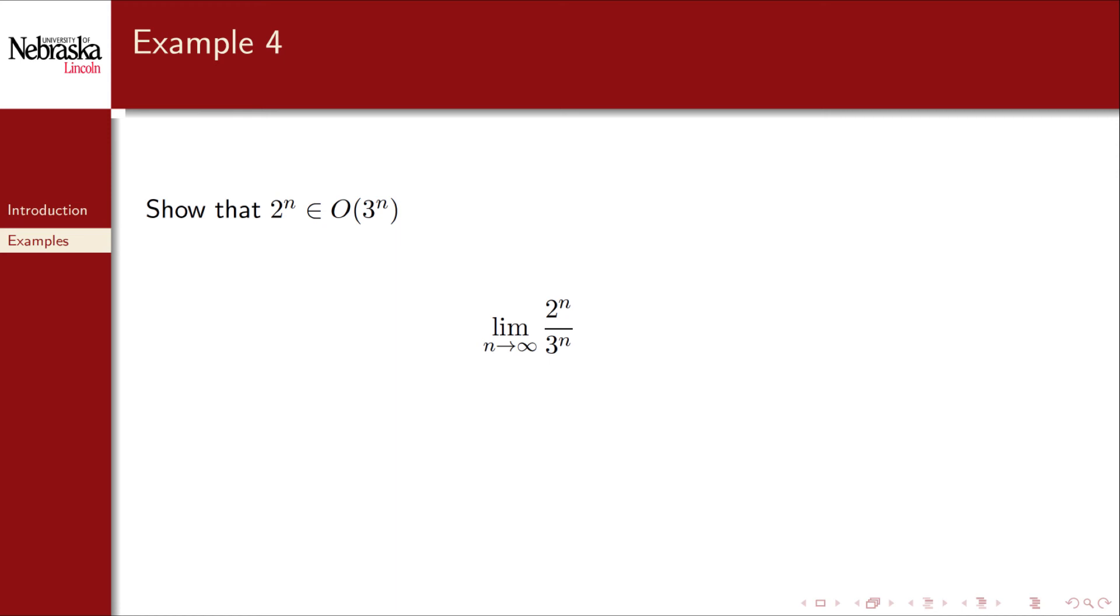Let's try that again. Always look for algebraic simplifications first before applying more advanced techniques. Since 2/3 is less than 1, the limit as n tends towards infinity will diminish this term down to 0. And so we've shown the Big O characterization.